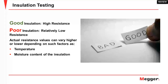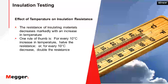When we say good insulation, we are talking about high resistance. Poor insulation is relatively low resistance. Actual resistance values can vary higher or lower depending on factors such as temperature and the moisture content of the insulation. The resistance of insulating material decreases markedly with an increase in temperature. One rule of thumb: for every 10°C increase in temperature, it will halve the resistance. Or for every 10°C decrease in temperature, that will double the resistance. Please take note of that.